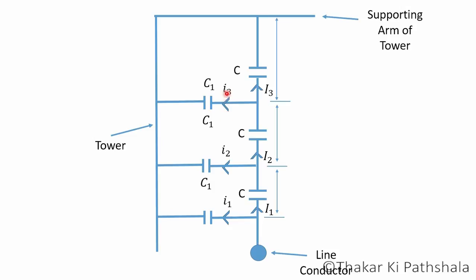Charging currents will be divided into two parts: one for mutual capacitance and the other for shunt capacitance. The mutual capacitance part will be represented by I1 and the shunt capacitance part will also flow separately. What happens is that I1 will be further divided into I2 components. Due to this, the flowing charging current will differ from disc to disc, and that is why the voltage distribution becomes uneven through all the discs in the string.